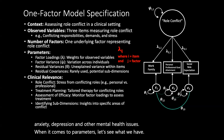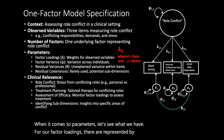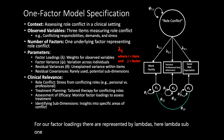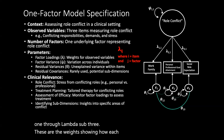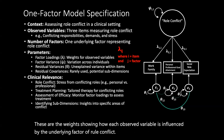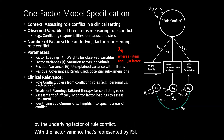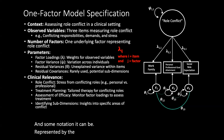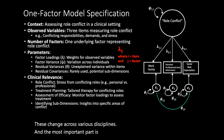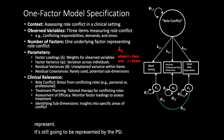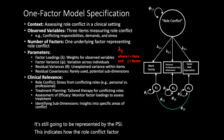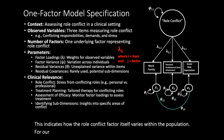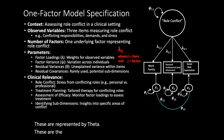When it comes to parameters, for our factor loadings — represented by lambda sub one through lambda sub three — these are the weights showing how each observed variable is influenced by the underlying factor of role conflict. The factor variance is represented by psi (in some notation phi), and it indicates how the role conflict factor itself varies within the population. For our residual variances, represented by theta, these are the variances within items that are unexplained by the factor — essentially the leftovers. Each residual will vary.